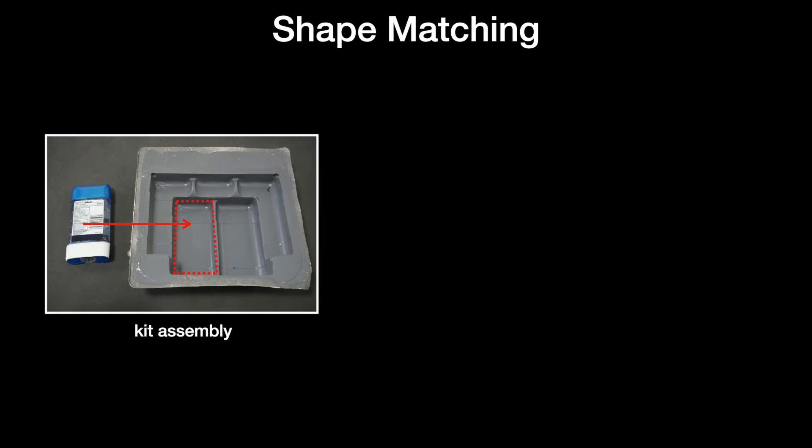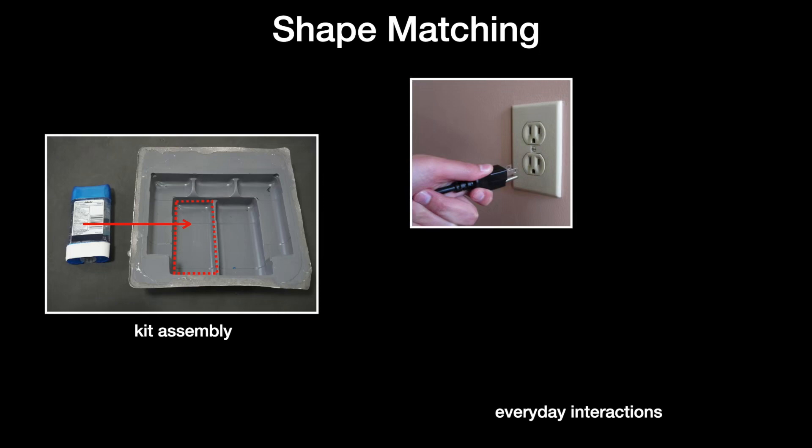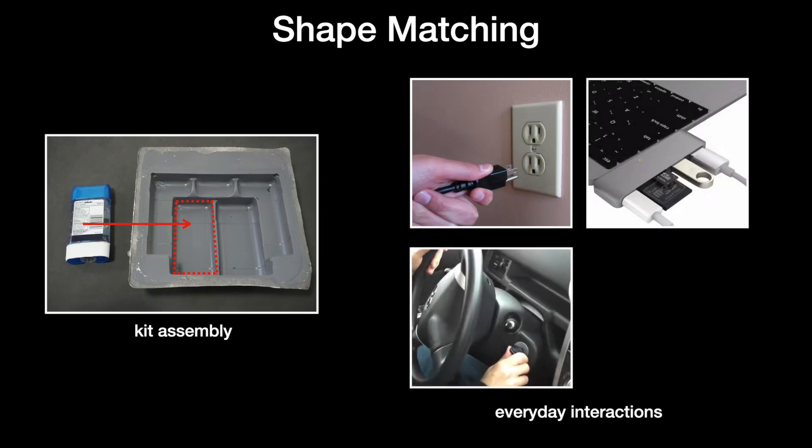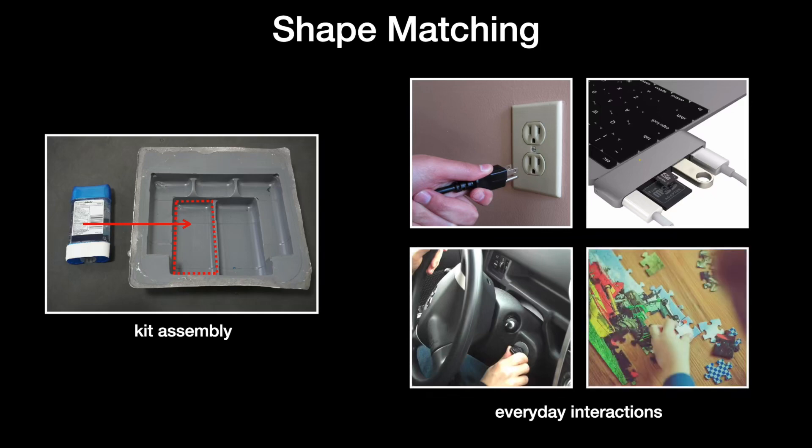Shape matching plays an important role in many manipulation tasks such as kit assembly. In fact, the shape of an object often matches the shape of the corresponding space in its placement location. Understanding this relationship is what allows us to seamlessly assemble objects in our everyday interactions.